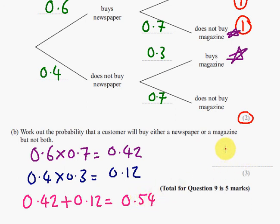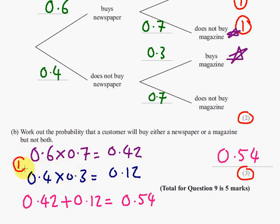I'm going to write that on the answer line. This is a three mark question. The first mark comes from either seeing 0.6 times 0.7 or 0.4 times 0.3. The second mark comes from adding those probabilities together. And the third one comes from the final answer of 0.54. And there's your three marks.